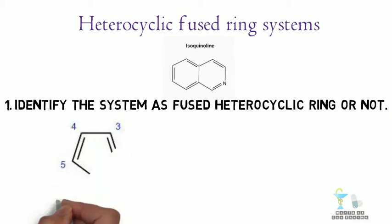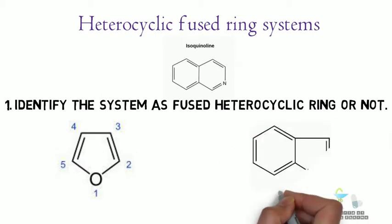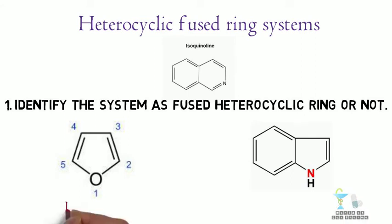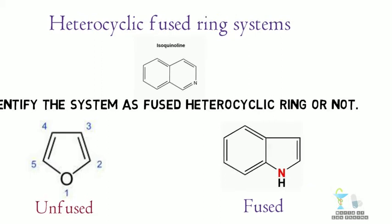Now just by looking at the atom, we can find if the atom is fused or unfused. For example, just look at these two atoms. In this, this is unfused and this is fused one. Then the second rule.